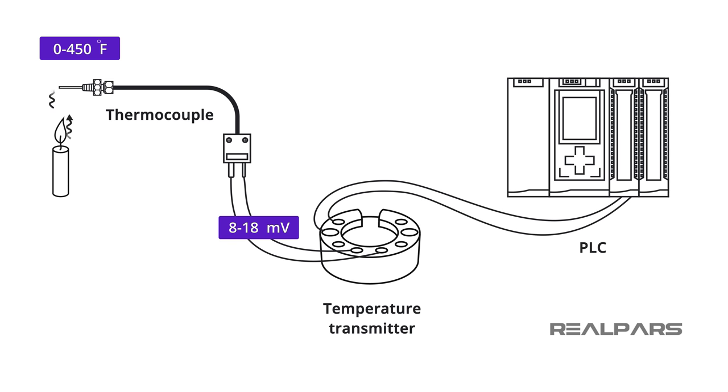In process control, we condition that 8 millivolts to 18 millivolts thermocouple voltage and convert it to a 4 milliamps to 20 milliamps industry standard signal that represents our controlled temperature range.